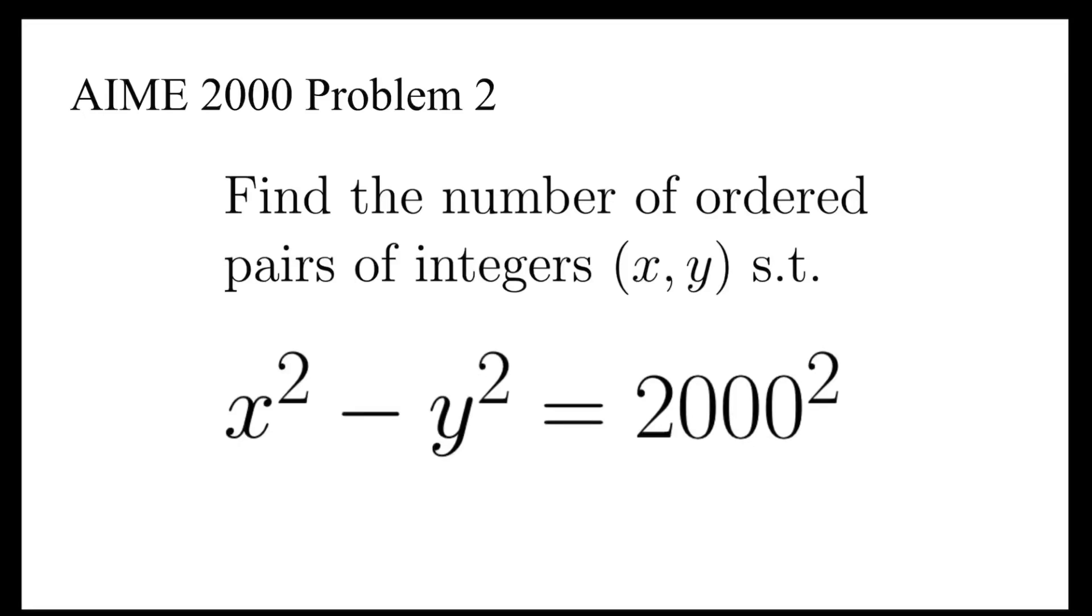In this video, we are going to find the number of ordered pairs of integers x and y, such that x squared minus y squared equals 2,000 squared. This problem is from AMC 2000.